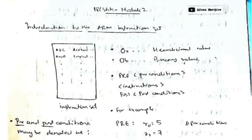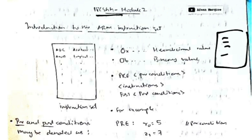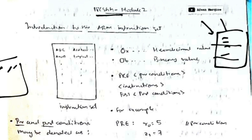Hello everyone. Today we'll be discussing the second module of microcontrollers. In this module we'll be learning how to write code in assembly level language. This module is divided into three parts: first, learning the keywords used in assembly; second, looking at instruction types like branching, loading, and storing; and third, making our code more efficient through algorithms and techniques.